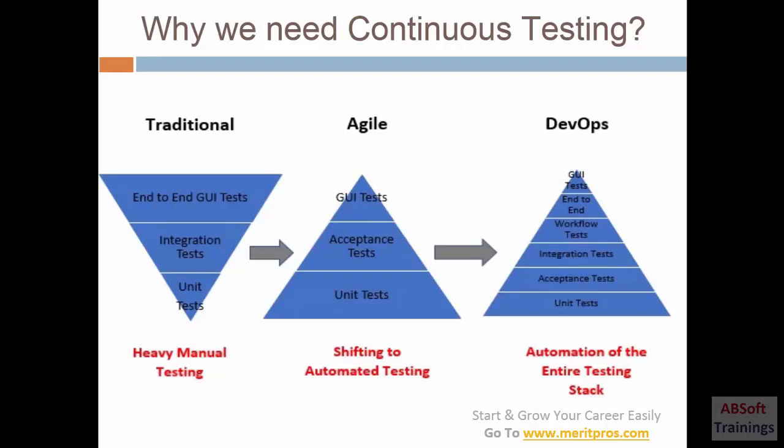In agile, the development process focuses mostly on unit testing — splitting requirements into different modules and doing development and testing using sprint and release features. In DevOps, the process is similar to agile but with a key difference: operation, which means monitoring our deployed code. In agile there is no monitoring of deployed code, whereas in DevOps we monitor our code using continuous integration and continuous deployment.